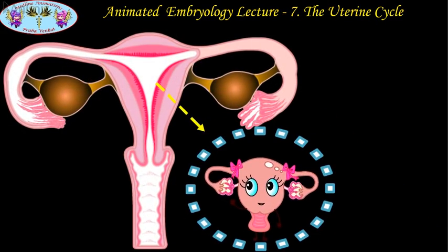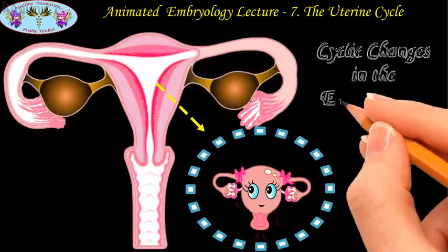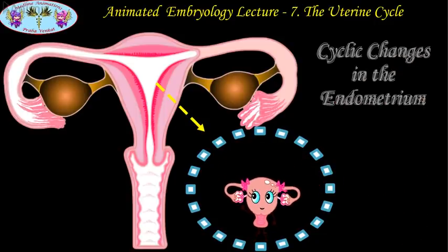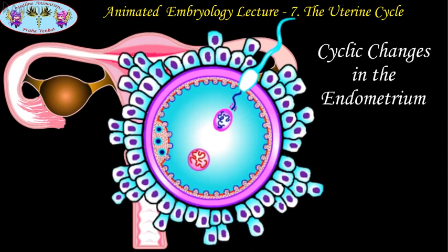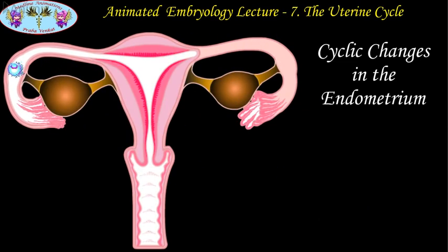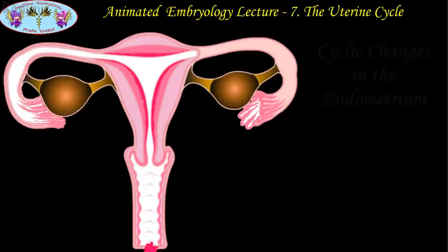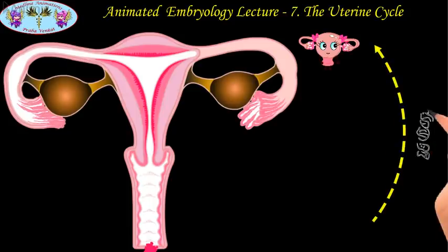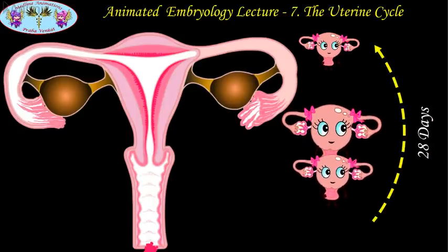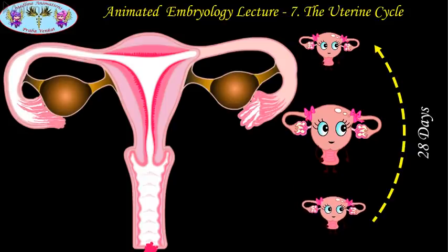The regular cyclic changes that occur in the functional endometrial layer of the uterus is called the uterine cycle. It is regarded as the periodic preparation for fertilization and subsequent pregnancy. In humans it is known as the menstrual cycle, where the most conspicuous feature is the periodic vaginal bleeding that occurs with the shedding of uterine mucosa. Its average length is 28 days, starting with the first day of menstruation.